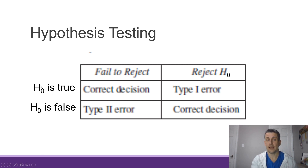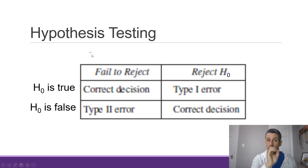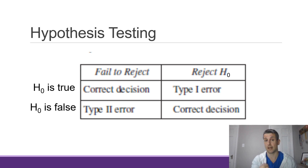Now, if the null hypothesis is actually true and we collect data and we reject the null hypothesis and take the alternative hypothesis, that would be incorrect. So, the null hypothesis is actually true, but we reject the null hypothesis. That is called a type 1 error.